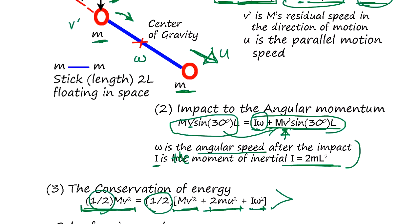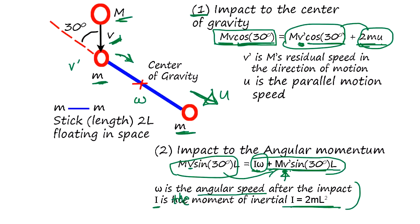V prime is going to give us U, the speed moving this direction. Okay, so the stick is going to move this direction while it's spinning.